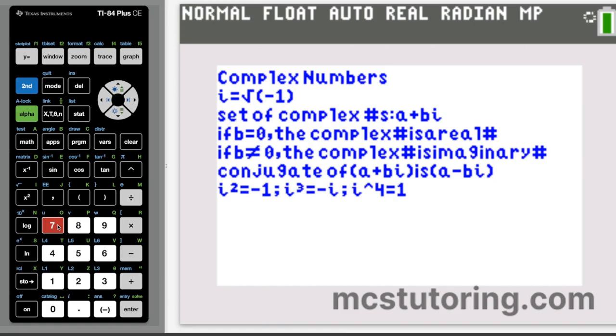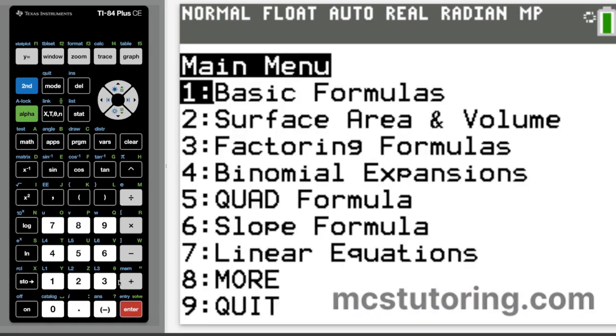Last thing, some students wanted i's worked out to the fourth power. So i is square root of negative 1 at the top. But then you also have i squared is negative 1. i cubed is negative i. And i to the fourth is 1, as strange as it seems.